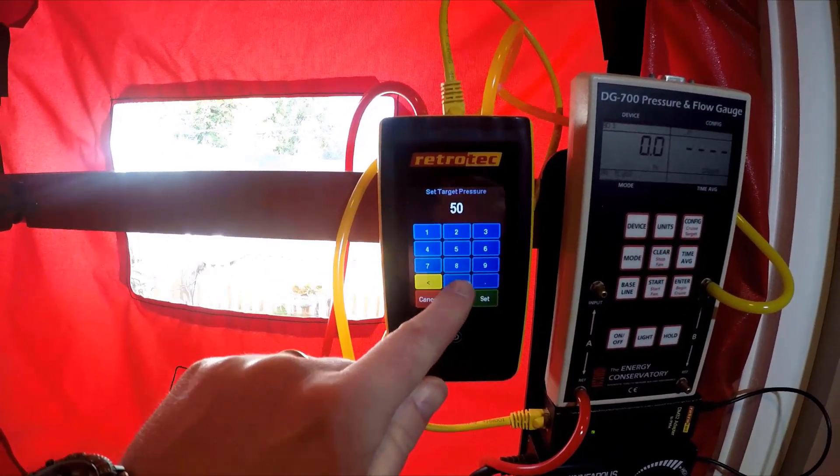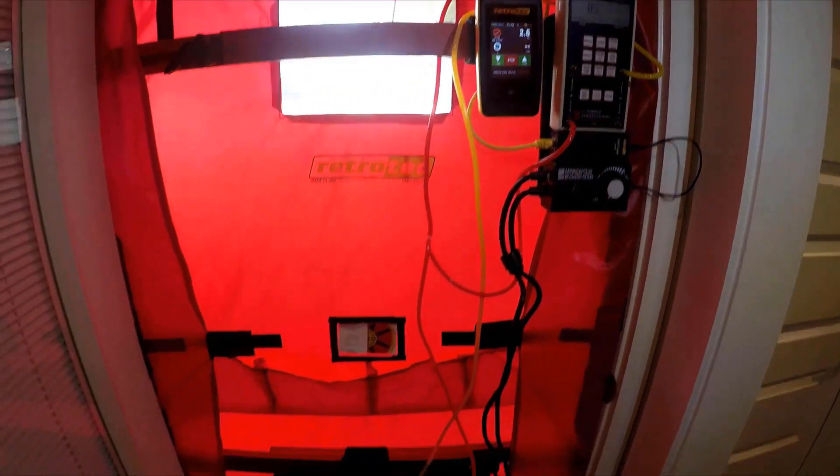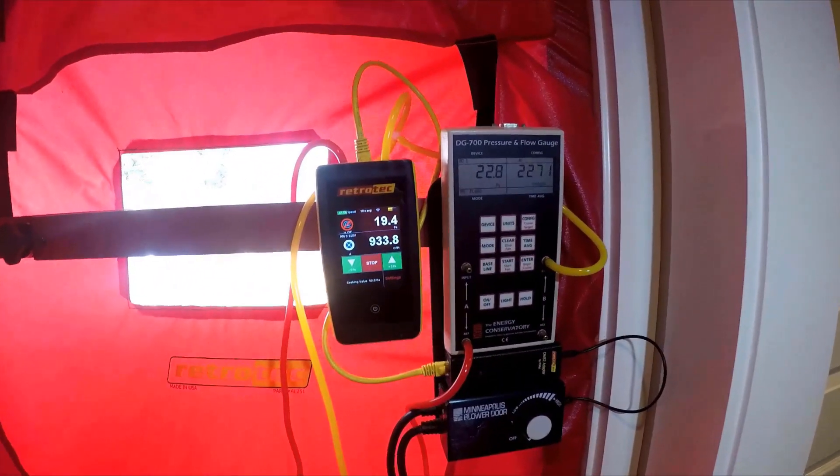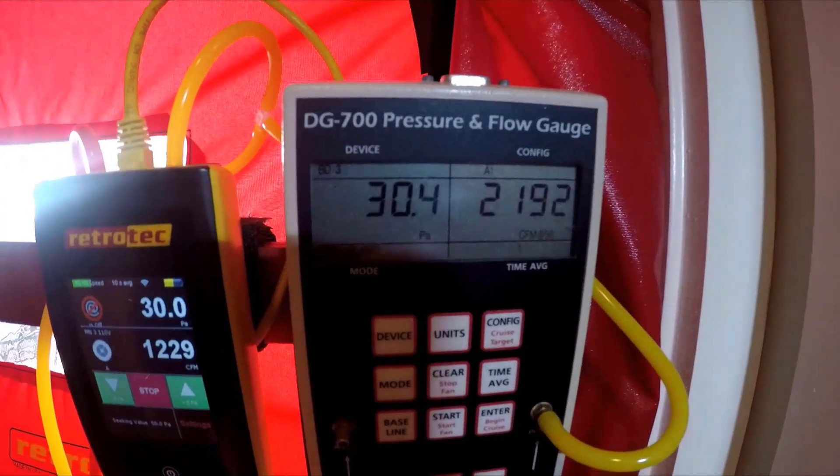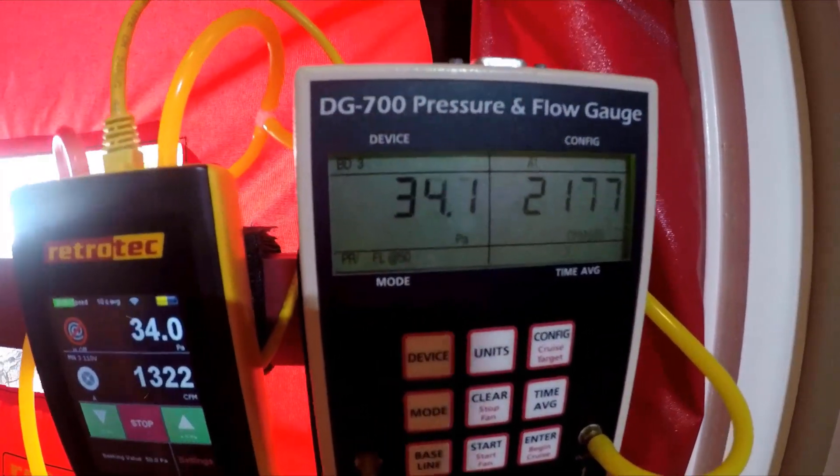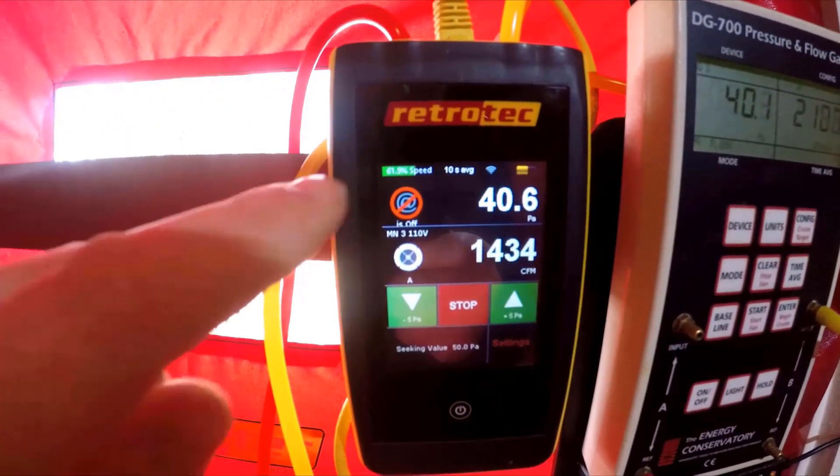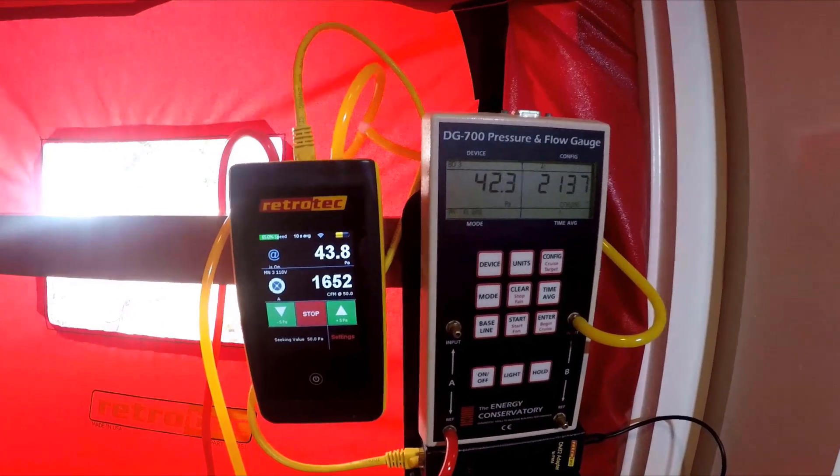So we'll go ahead and set our blower door to run at 50 pascals pressurizing the house. We have the DG700 set to extrapolate to 50 pascals here. And so we'll go ahead and set our DM32 to do the same thing.